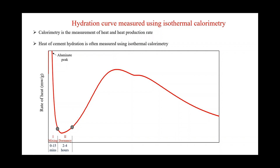Another chemical change during the dormant period is that the silicates — C3S and C2S — slowly start dissolving, mostly C3S. This causes calcium ions and hydroxyl ions to accumulate in solution. Toward the end of the dormant period, called the initial setting, the cement paste slowly starts to set.